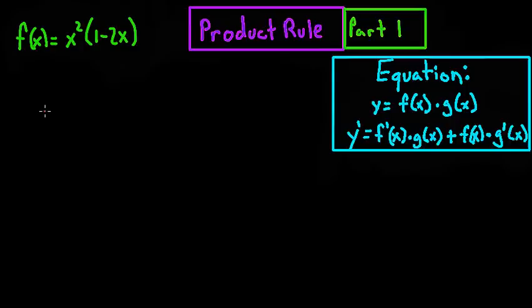Hi, today we're going to find the derivative of a function using the product rule. We've got the equation y equals f(x) times g(x). To find the derivative, you take f'(x) times g(x) plus f(x) times g'(x).